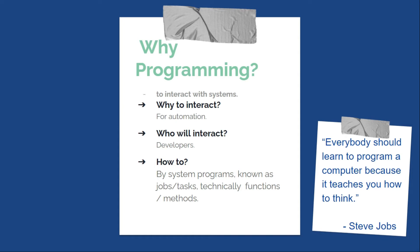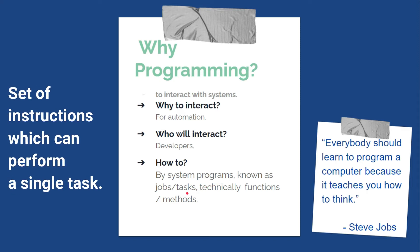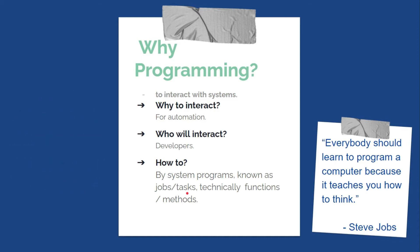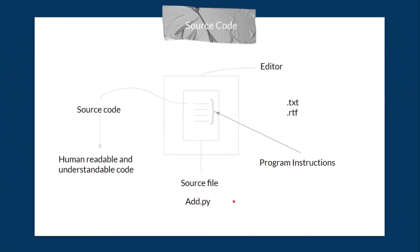Developers like us will interact with systems, and we do so by writing system programs — also known as jobs or tasks. A job is a set of instructions which can perform a single task, and these jobs are technically known as functions or methods.